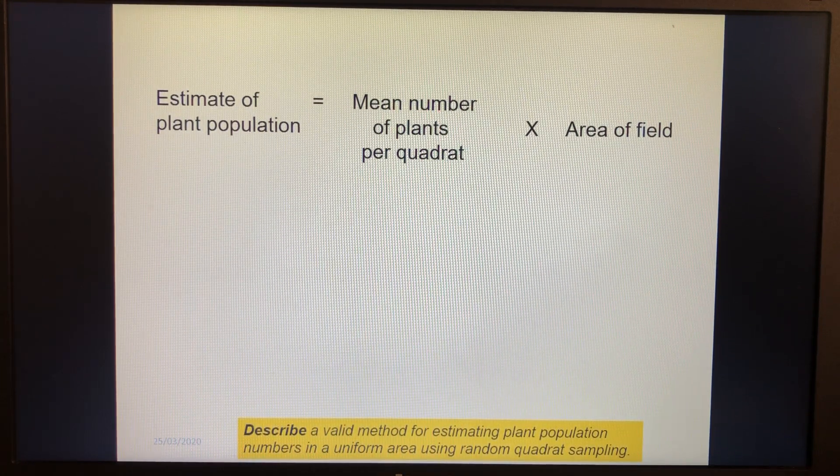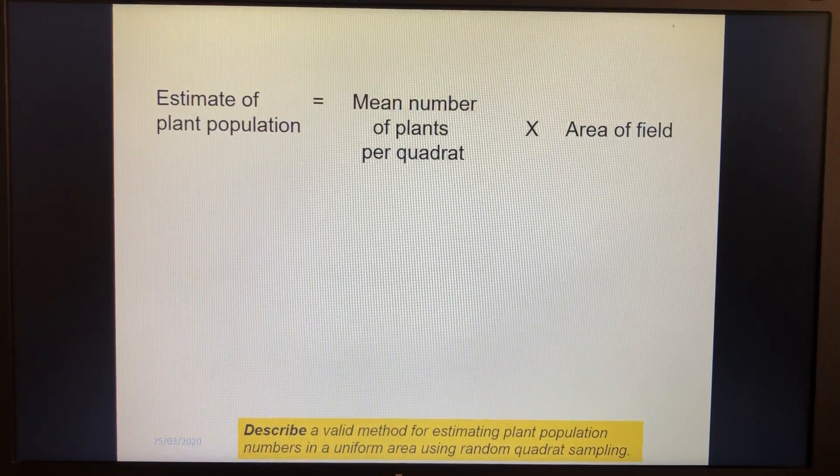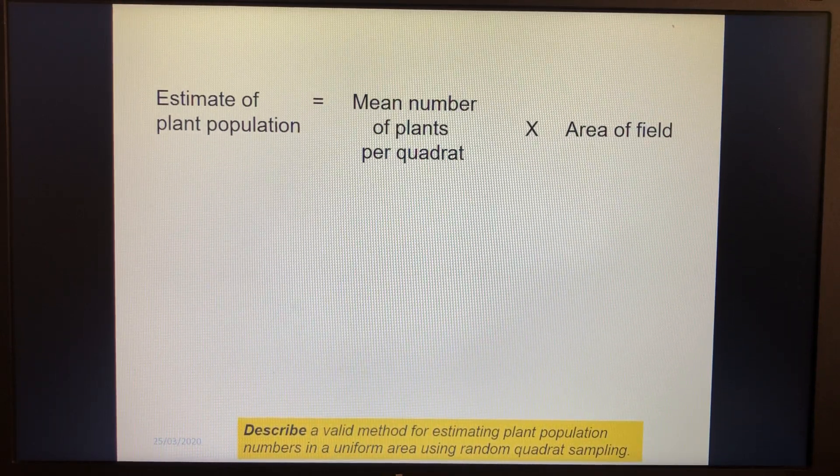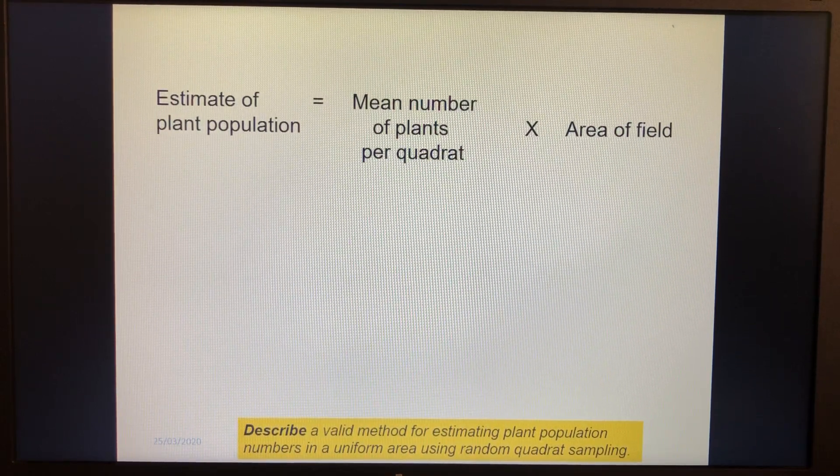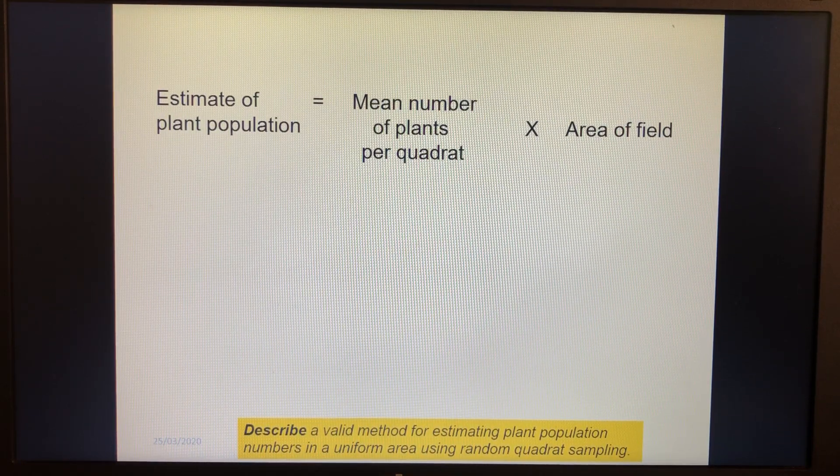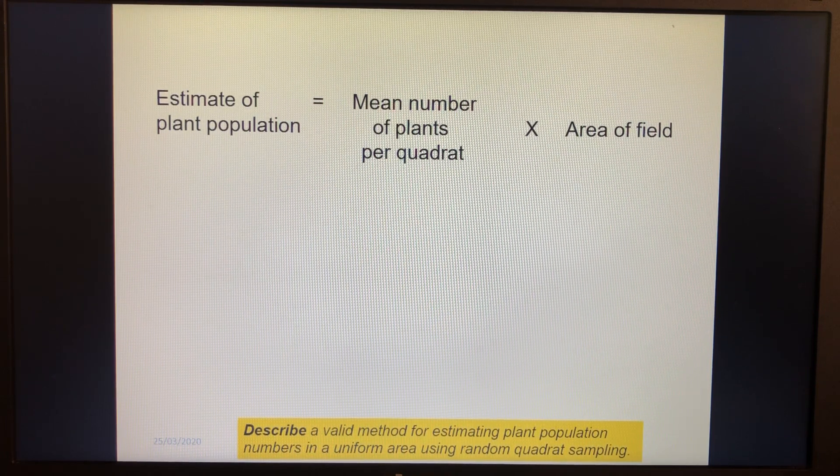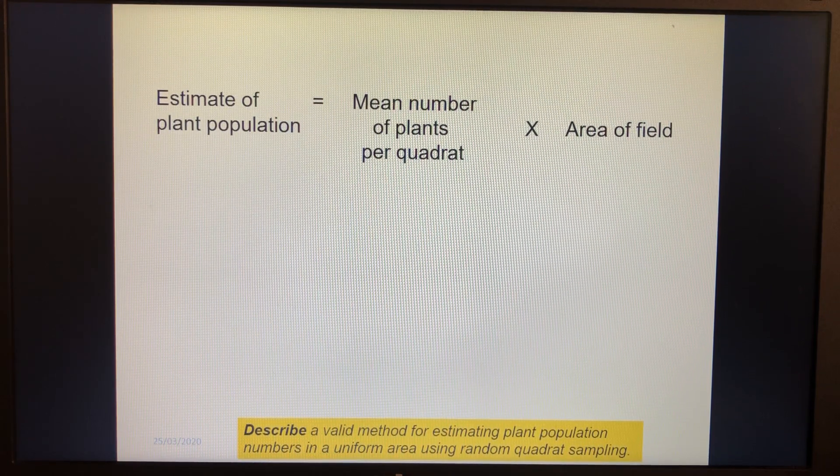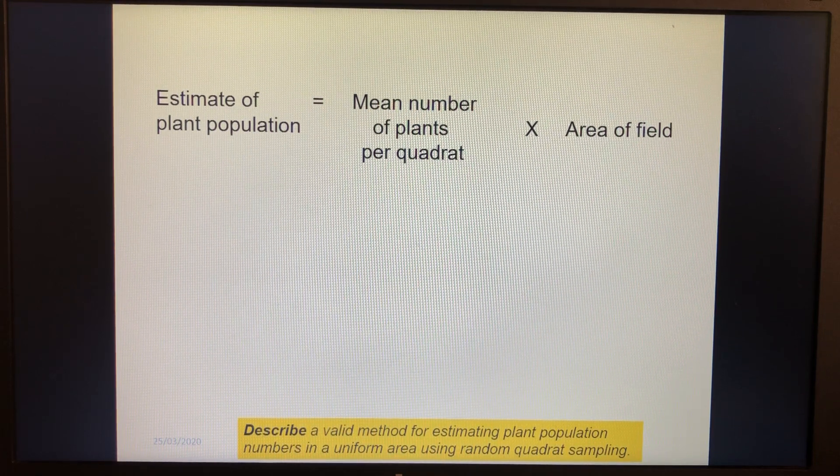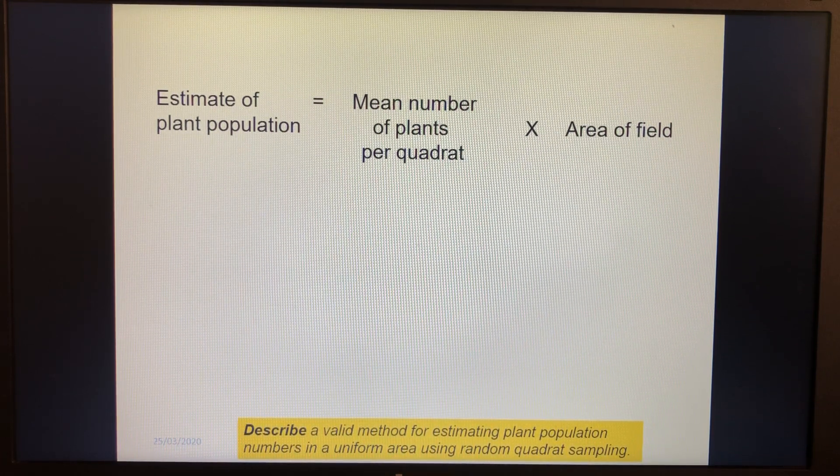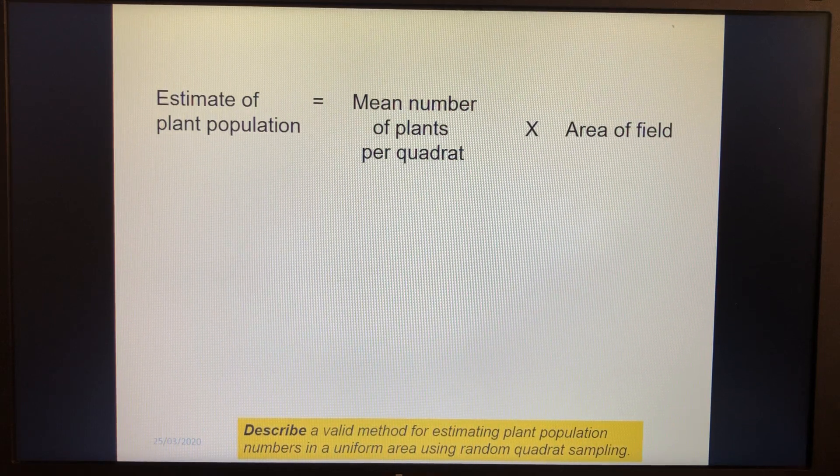And then what we've got to do is get our estimate. So if we've got the area of the field, which we worked out with our trundle wheel, we've got our mean number of plants per quadrat, multiply those together and you get the estimate of that particular plant population on the field. However, the quadrats we use at school are only half a metre by half a metre. That's a quarter of a metre squared. So in actual fact, in one metre squared, we could get four of those quadrats.